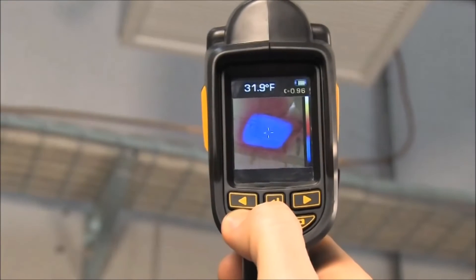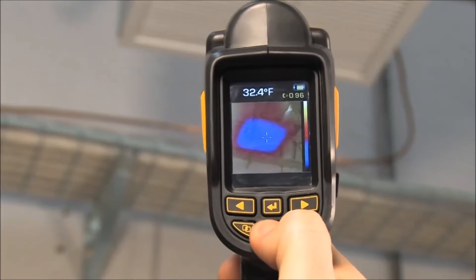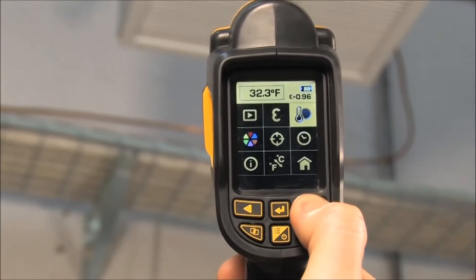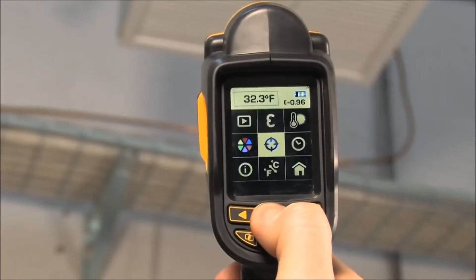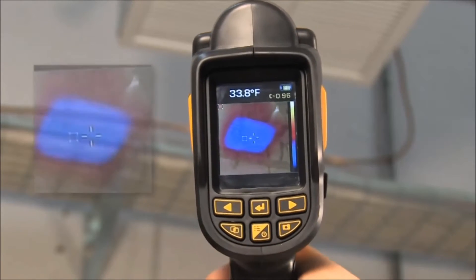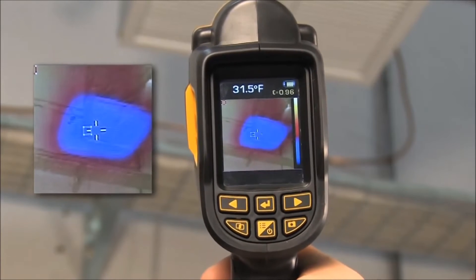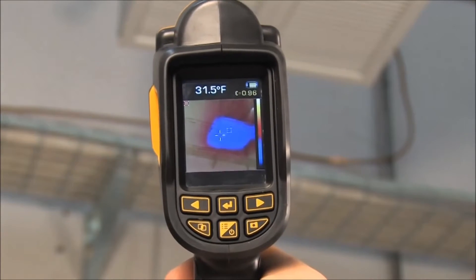When the tracking feature is turned on, the DCT416 will automatically show the hottest and coldest spots in the viewing area. The hot spot is indicated with a red cursor and the coldest with a blue cursor. You can then move the center mark to align with either the red or blue cursor.